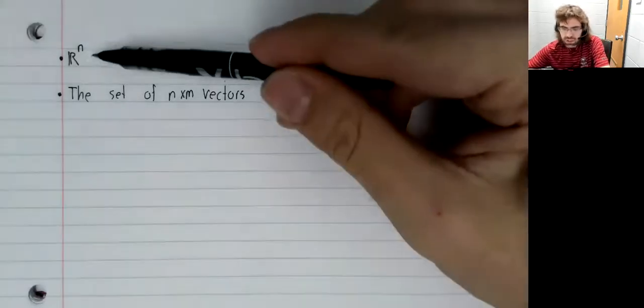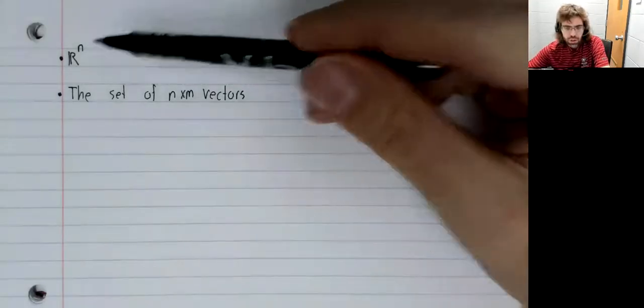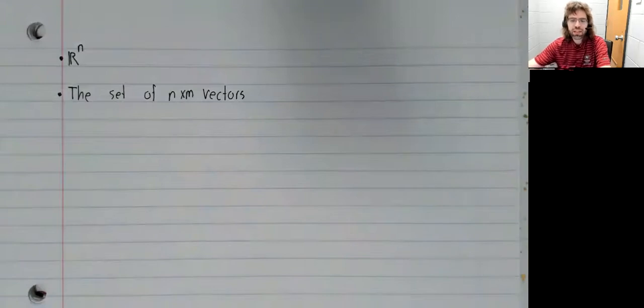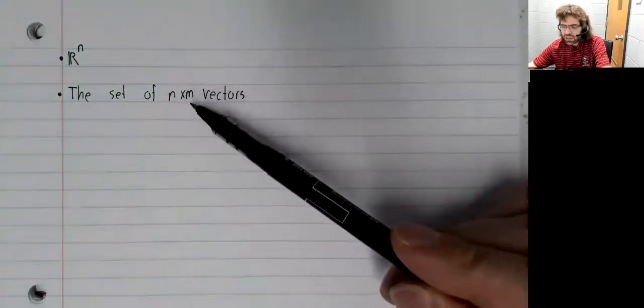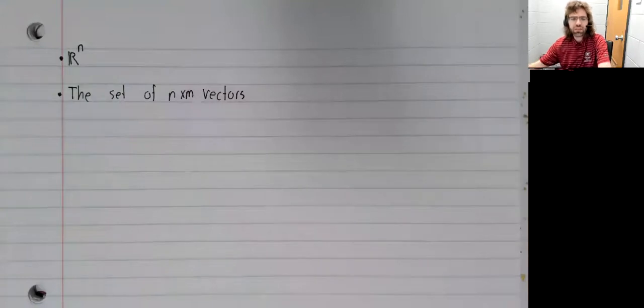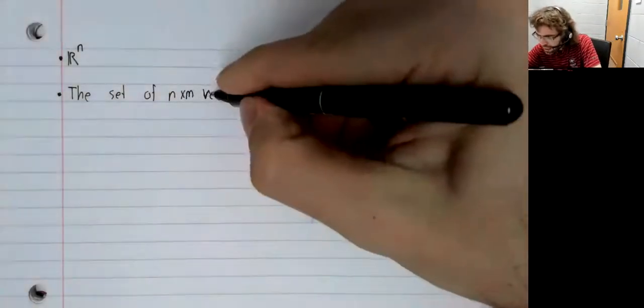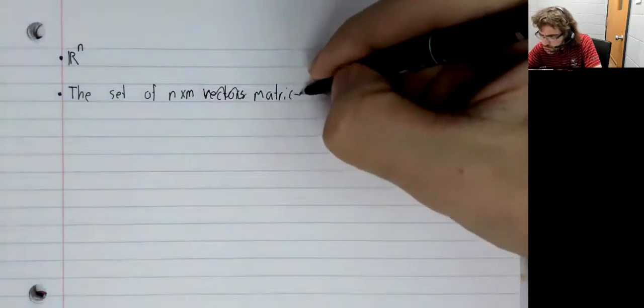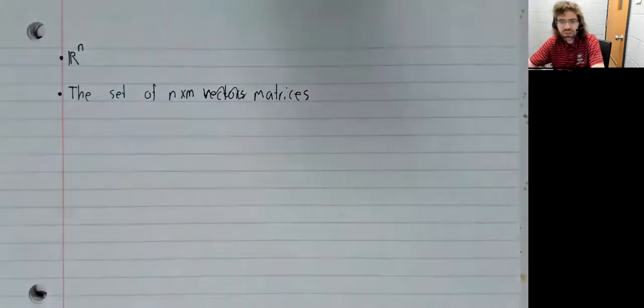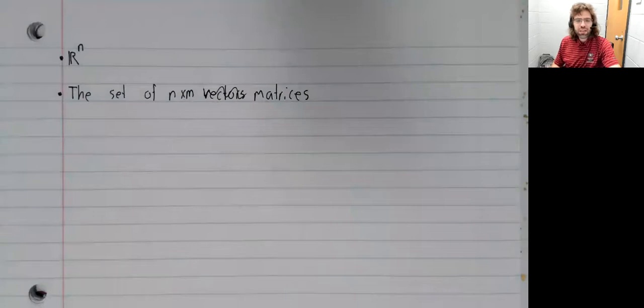R^n is kind of the ur-example that gives vector spaces their name. And then for a fixed n and a fixed m, the set of n by m matrices is a vector space.